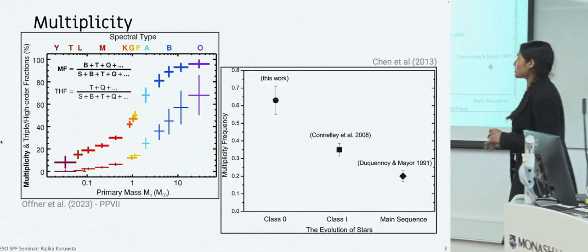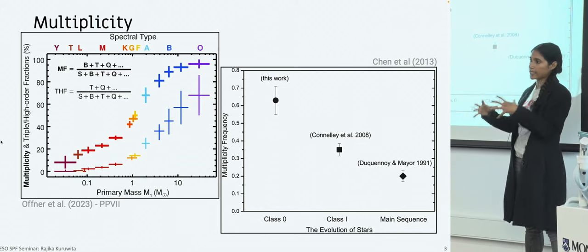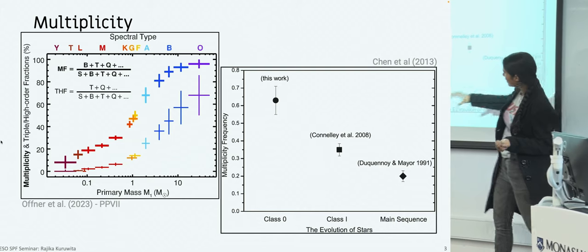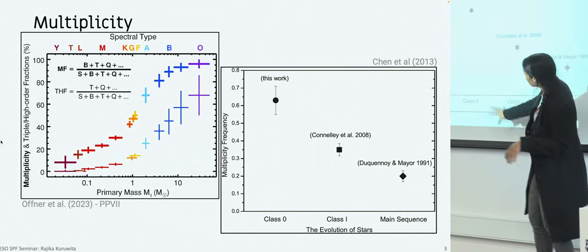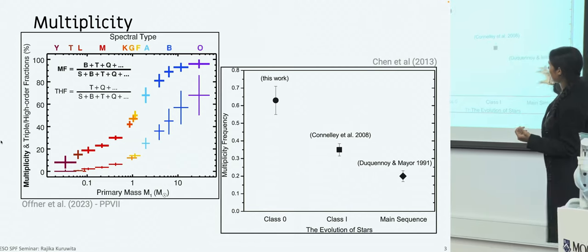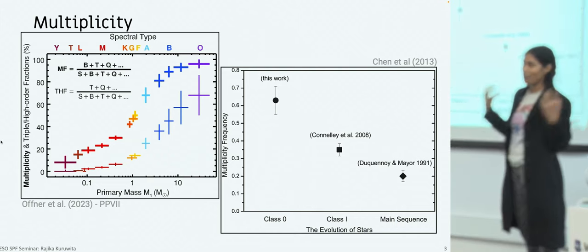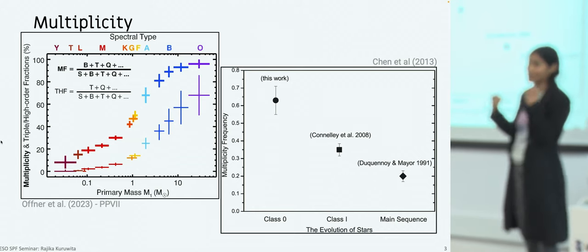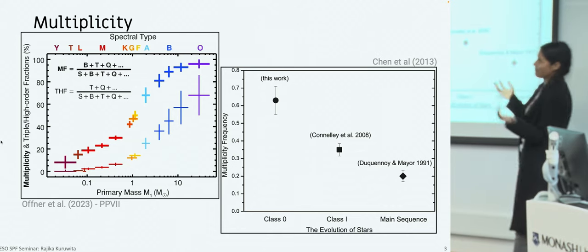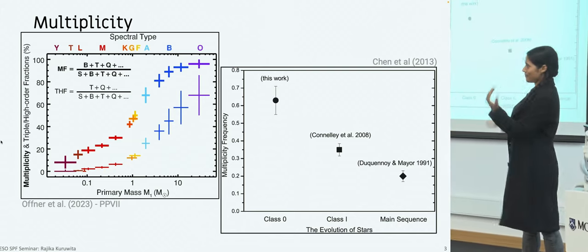Most stars are born in multiple star systems. These are the protostellar classes: class zero is the very earliest stages of star formation, class one is in between with a disk, and main sequence is where our sun is. The multiplicity frequency for the youngest stars shows about two thirds of them have a companion. These young multiple star systems are interacting and disintegrating as they evolve, and while doing that they host protoplanetary disks — the site of planet formation. So if we want to understand planet formation, we probably should understand it in the context of multiplicity.